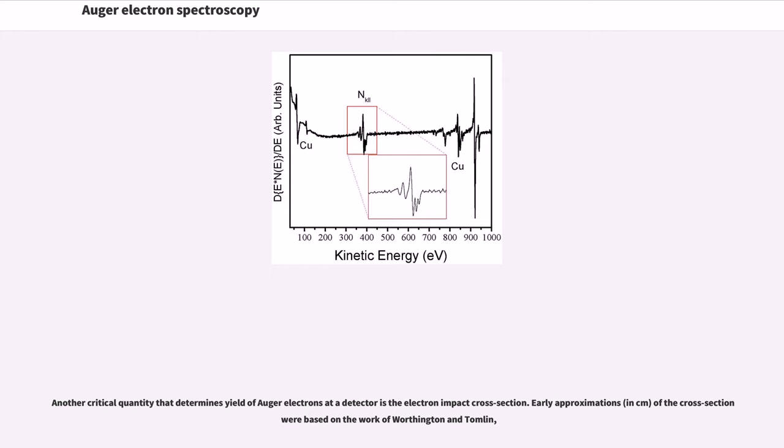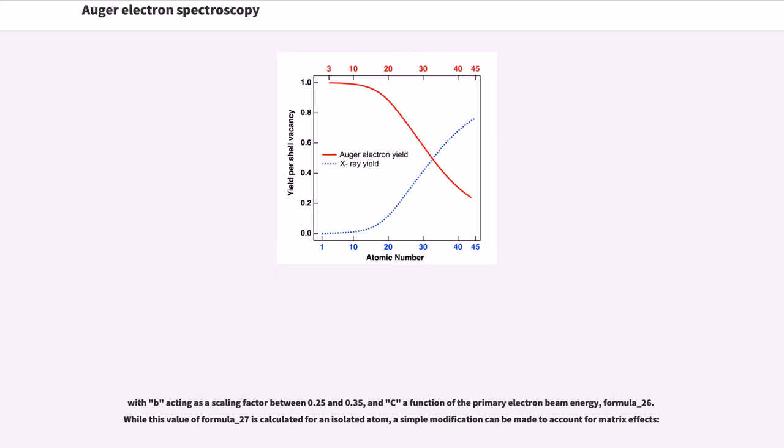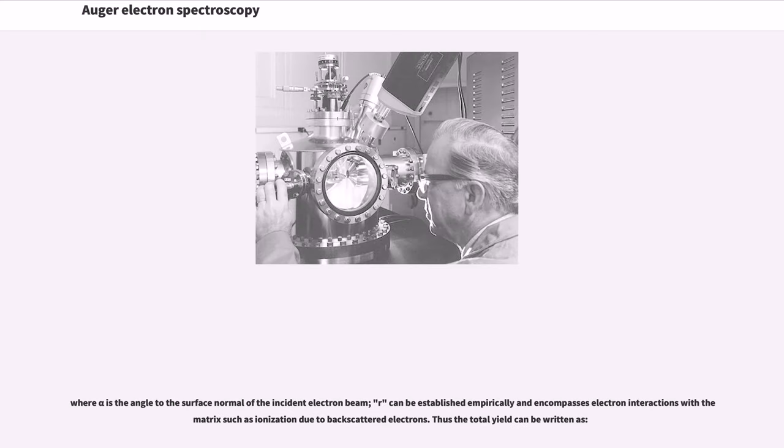Another critical quantity that determines yield of Auger electrons at a detector is the electron impact cross-section. Early approximations of the cross-section were based on the work of Worthington and Tomlin: σ = (b/U²)ln(cU), with b acting as a scaling factor between 0.25 and 0.35, and c a function of the primary electron beam energy E_p. While this value of σ is calculated for an isolated atom, a simple modification can be made to account for matrix effects: σ_matrix = σ(1 + R cos α), where alpha is the angle to the surface normal of the incident electron beam, and R can be established empirically and encompasses electron interactions with the matrix such as ionization due to backscattered electrons.